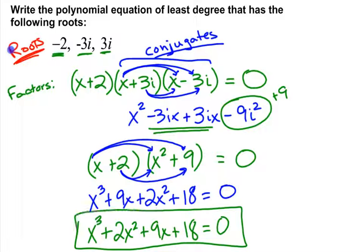This is the answer to our question. Make sure you always include equals 0 because it did ask for an equation, so it must be equal to something. Based on the factor theorem, it should be equal to 0.